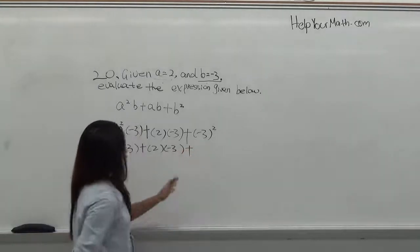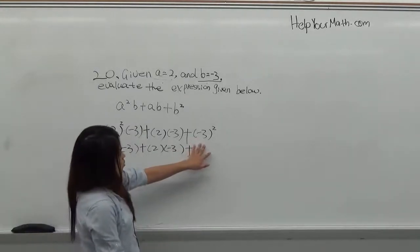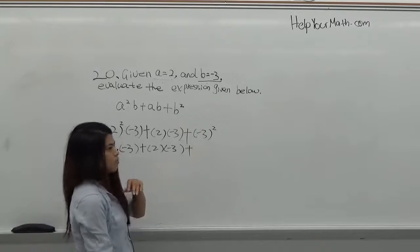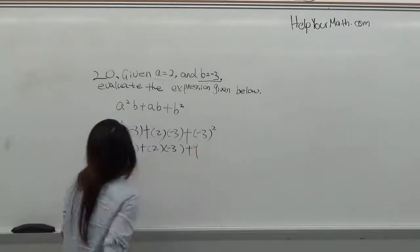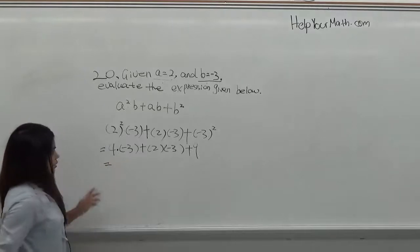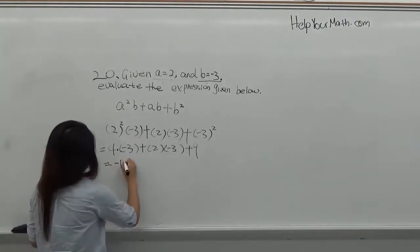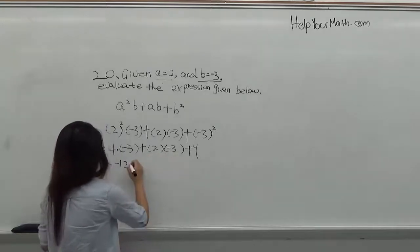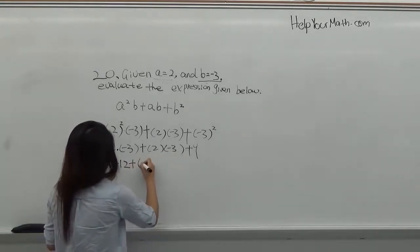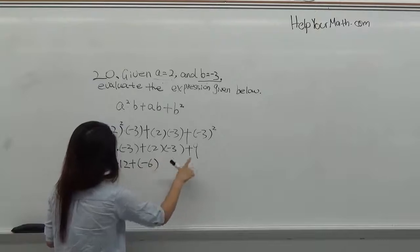And plus, negative 3 squared means negative 3 times negative 3, which is 9. Then you get negative 12, plus 2 times negative 3 is negative 6, and plus 9.